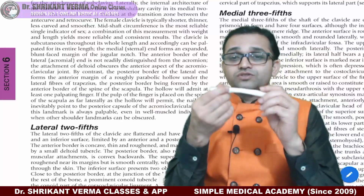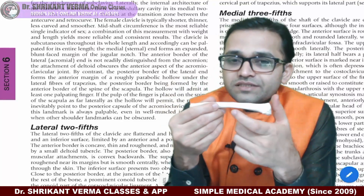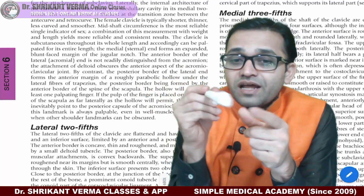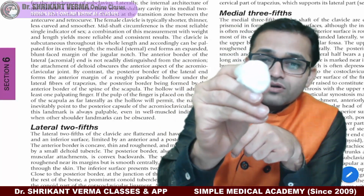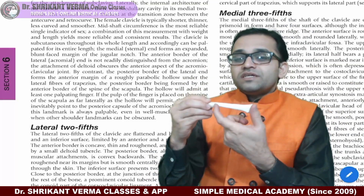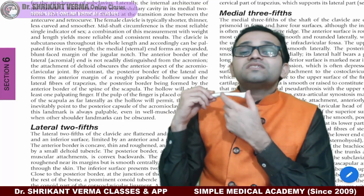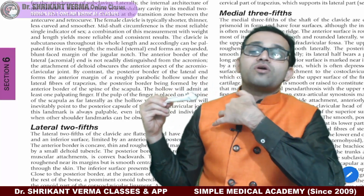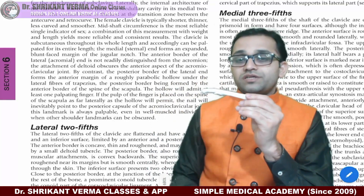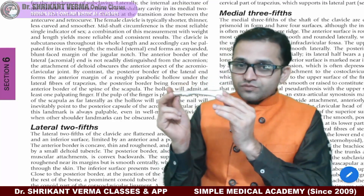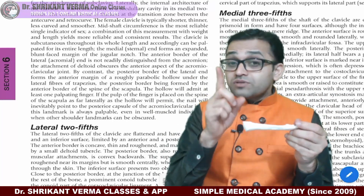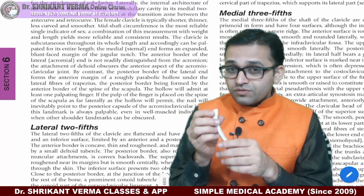For side determination, observe that one part is flat and another is rounded — the quadrangular or rounded end represents the medial two-thirds. The medial two-thirds has convexity anteriorly; just feel the clavicle in your body. The medial two-thirds is convex anteriorly while the lateral one-third is convex posteriorly.